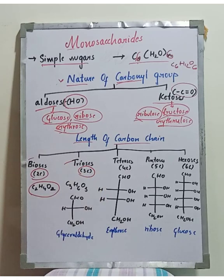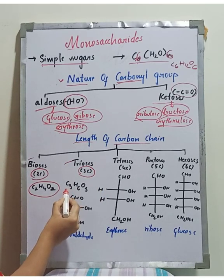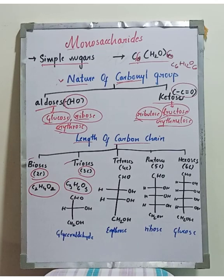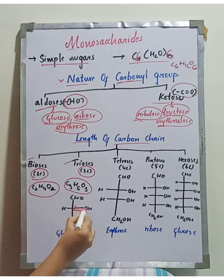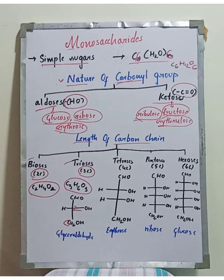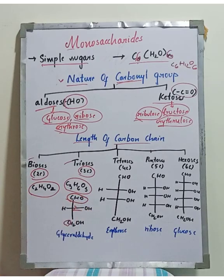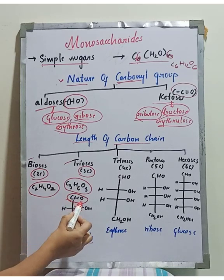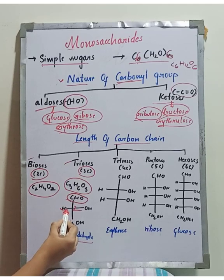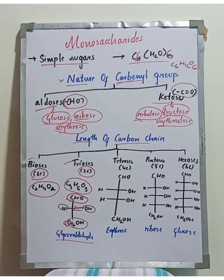The triose structure has 3 carbons. An example of an aldose triose is glyceraldehyde, which has a CHO group on the first carbon, followed by CHOH, then CH2OH. An example of a ketose triose is dihydroxyacetone, which has a C=O (ketone) group.